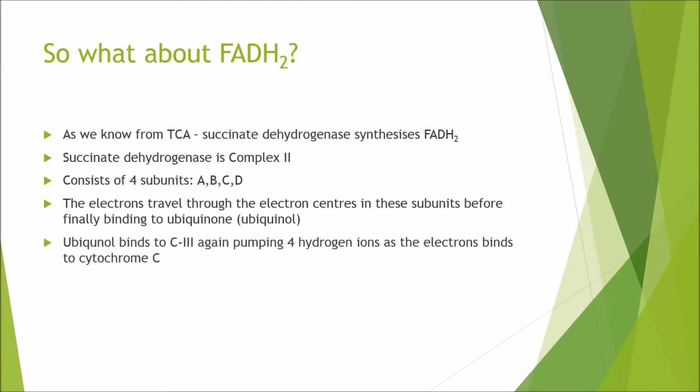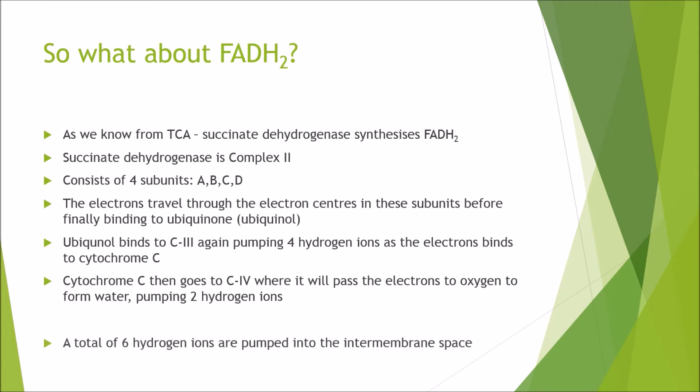Ubiquinol then binds to complex 3, again pumping four hydrogen ions as the electrons bind to cytochrome C. Cytochrome C then goes to complex 4, where it will pass the electrons to the oxygen, and pump another two hydrogen ions. So a total of six hydrogen ions are pumped into the intermembrane space. This is because we skip complex 1, which would add another four. Therefore, six divided by four means only 1.5 ATP are synthesized for every molecule of FADH2.